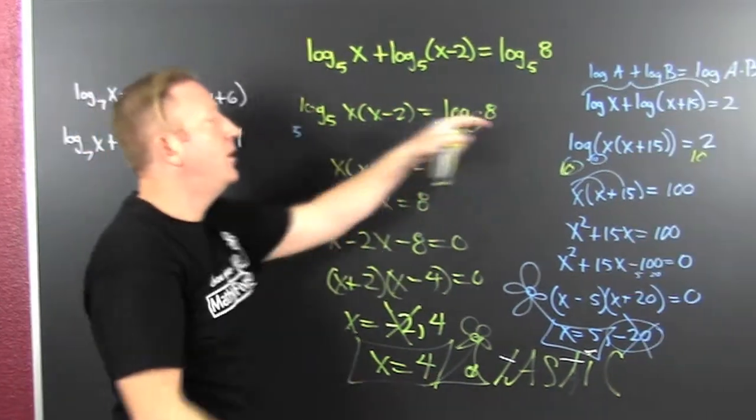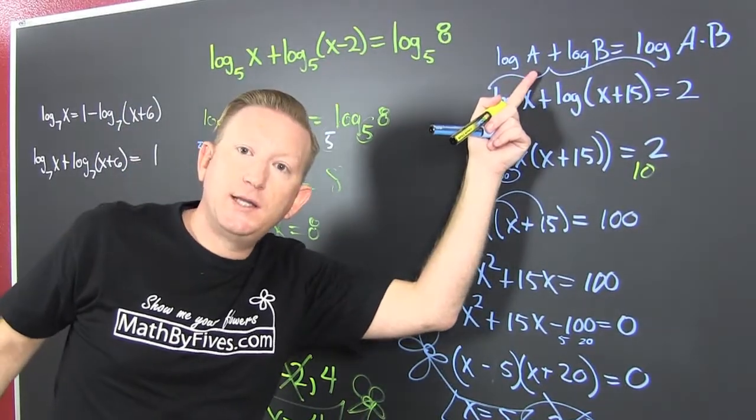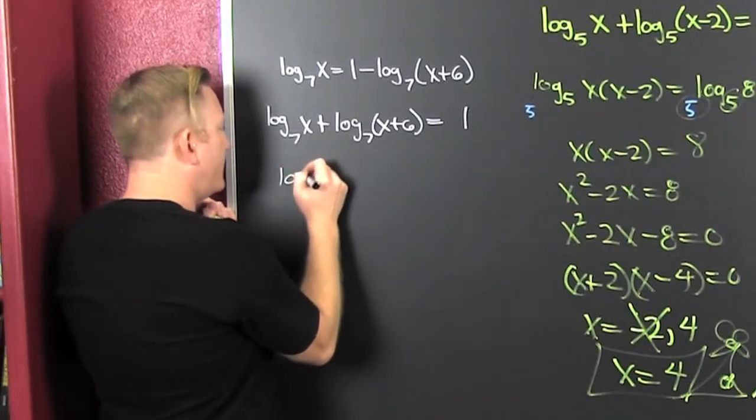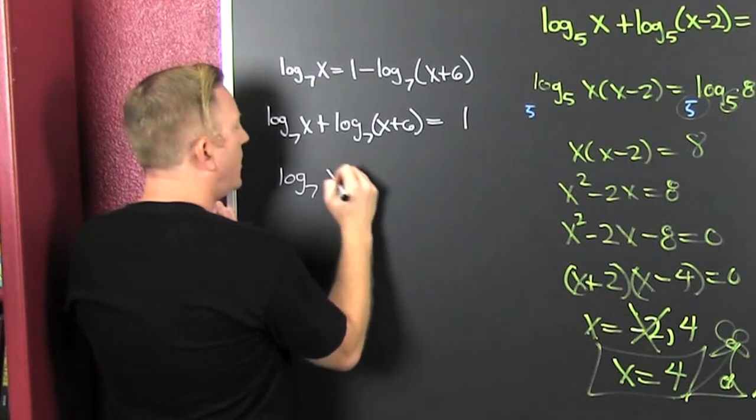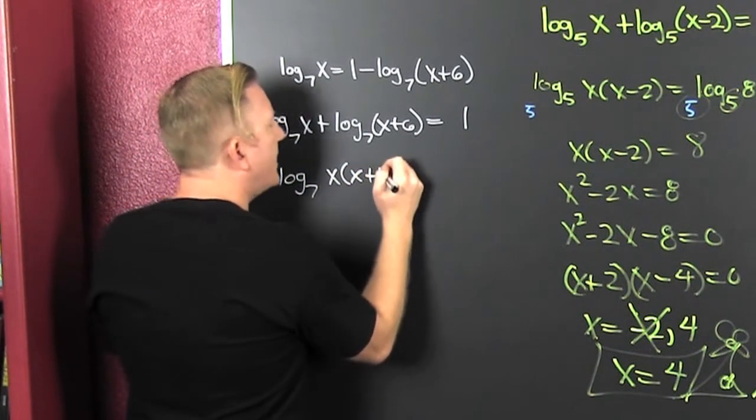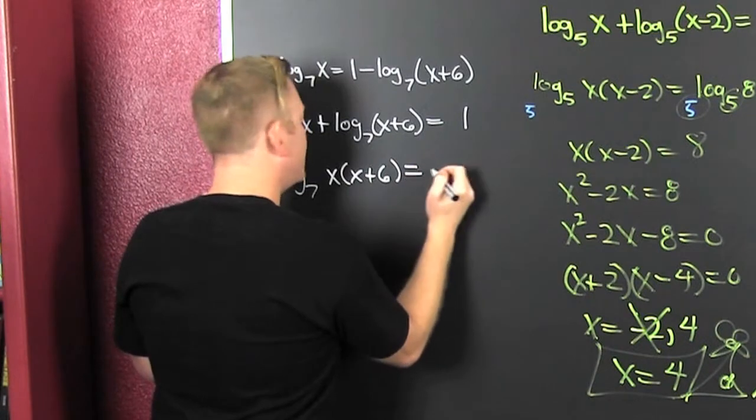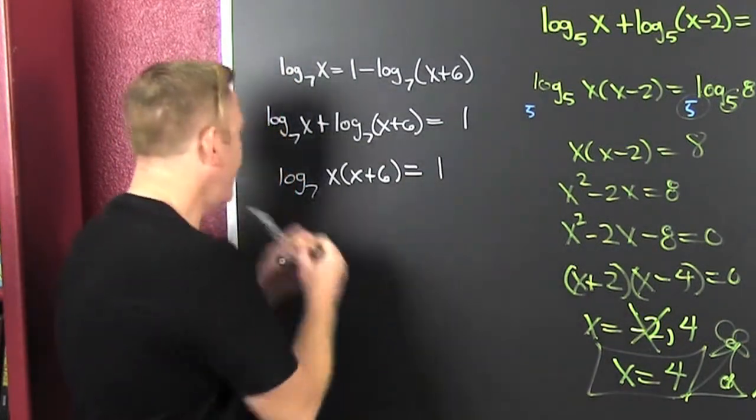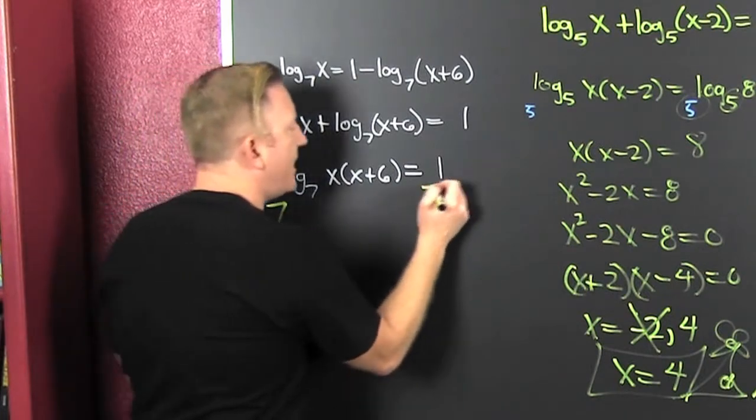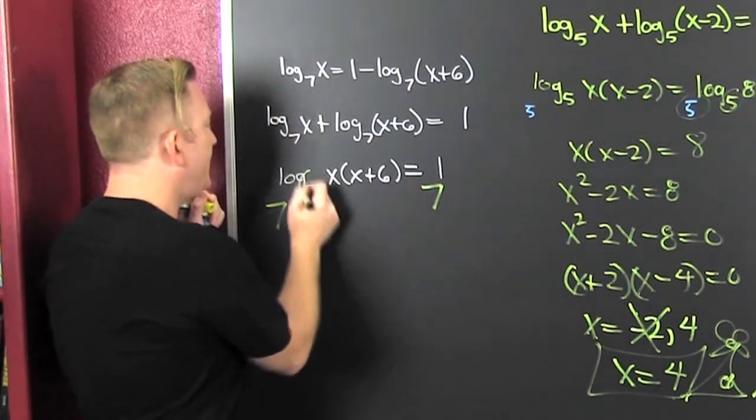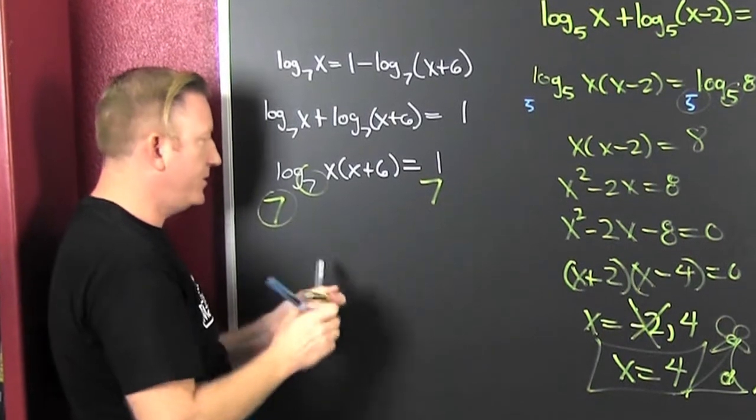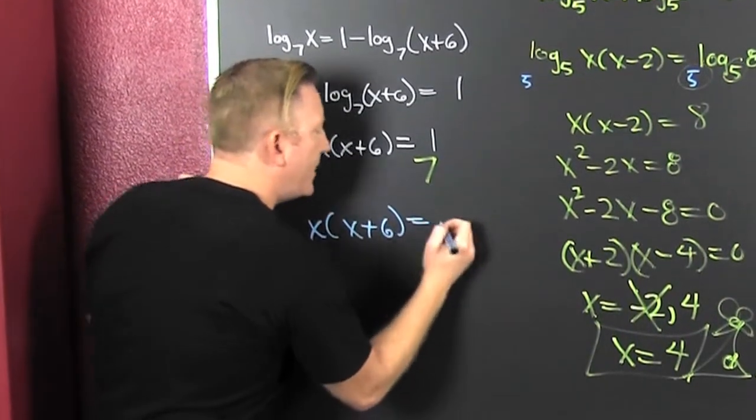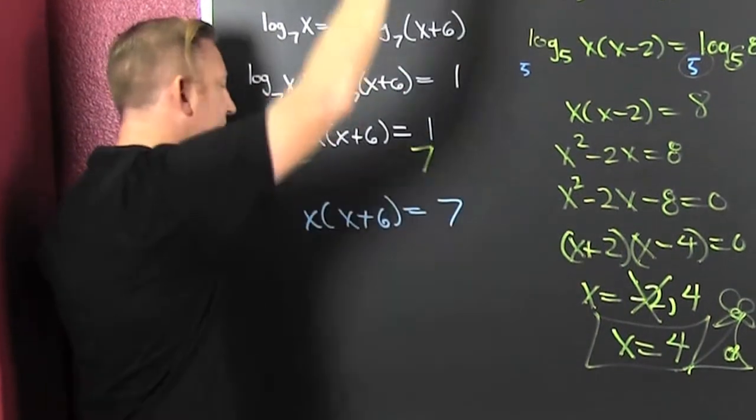Now what? One log. Let's get those logs together. It'll be all right. Same trick. Everywhere I go, I see the same trick. Now what? 7 up. Exponentiate both sides. 7 to the... these match. I get the arguments. x times x plus 6, that's going to be equal to a 7 because 7 to the 1 is 7. Heaven.